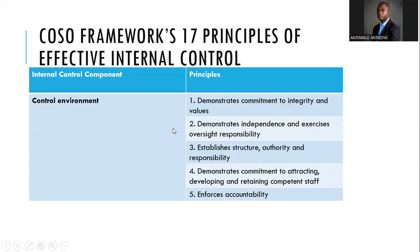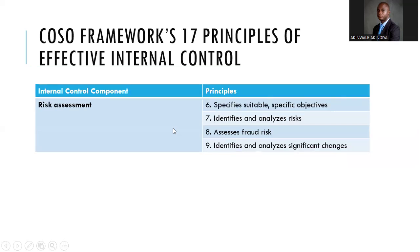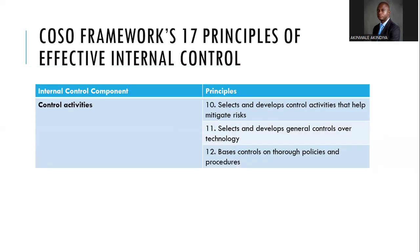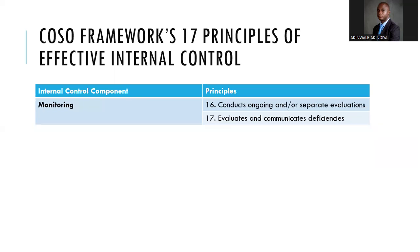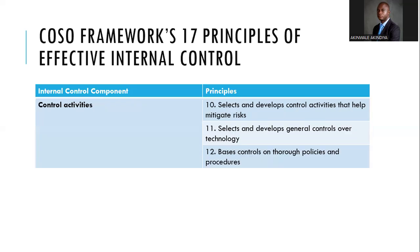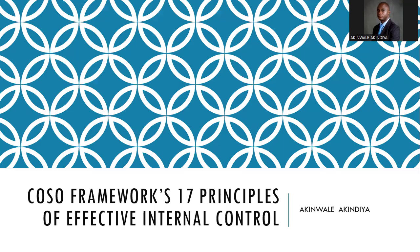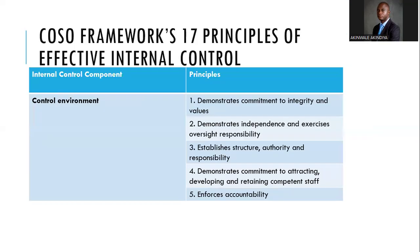There are five components: control environment, risk assessment, control activities, information and communication, and monitoring. Those are the five internal control components according to COSO.